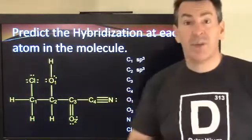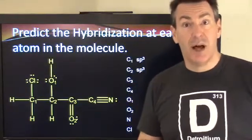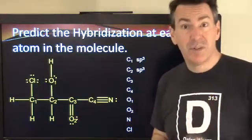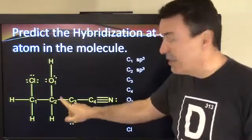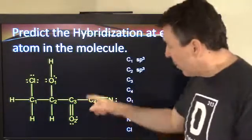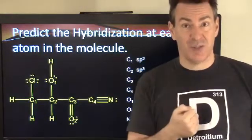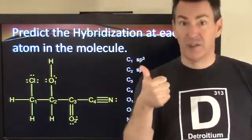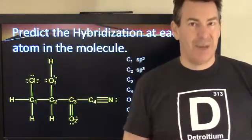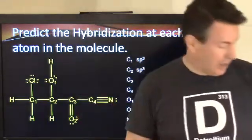Carbon number three is a little different. This one only has a total of three areas: the double bond counts as one area, then the single bond here and the single bond there. So three total areas. We need three orbitals to make up the hybridized orbital set: start with an S and you need two P orbitals, so SP2 is the hybridization at carbon number three.